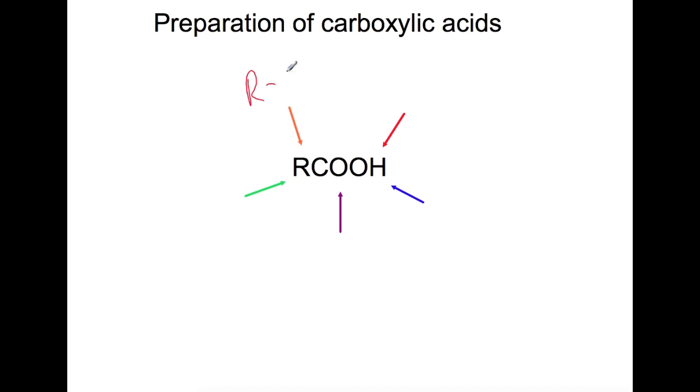To do this, you would use acidified dichromate, Tollens reagent, Fehling's reagent, and any of those could be used to oxidize from primary alcohol to carboxylic acid. The next reaction is also from higher; this is where you would have looked at oxidizing an aldehyde.